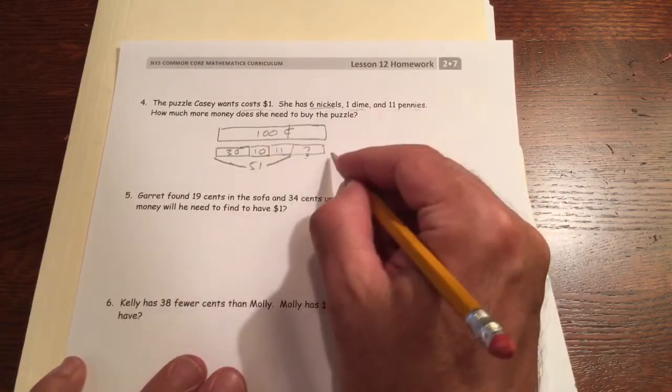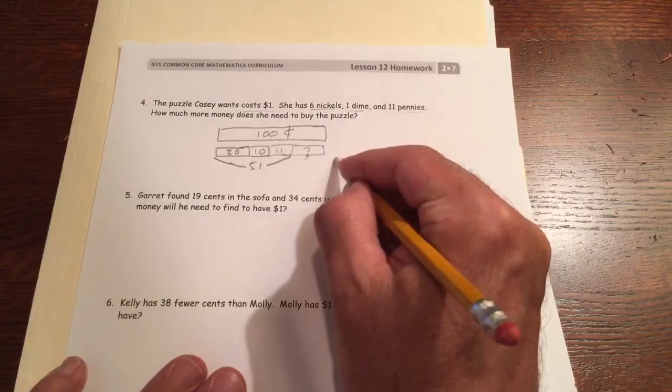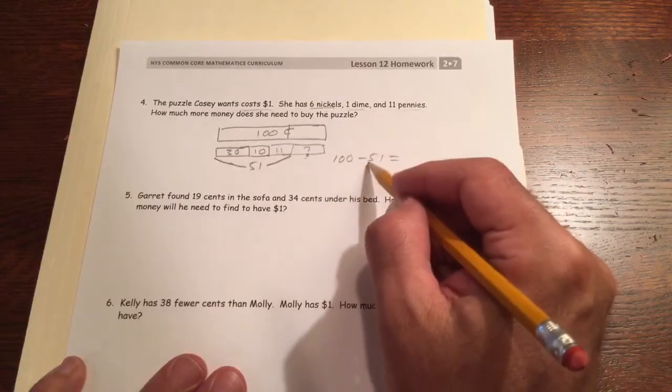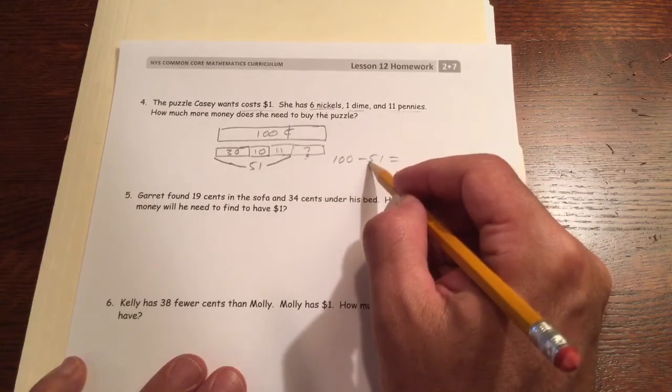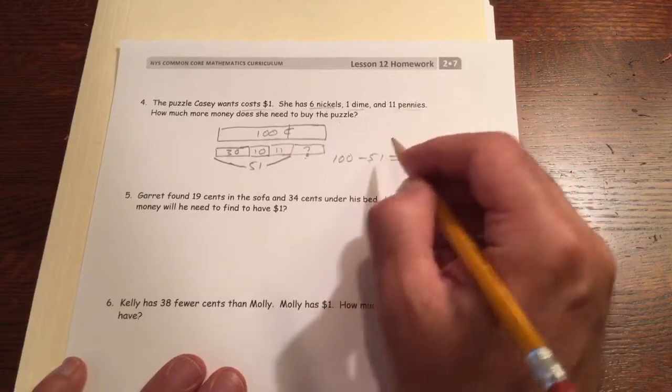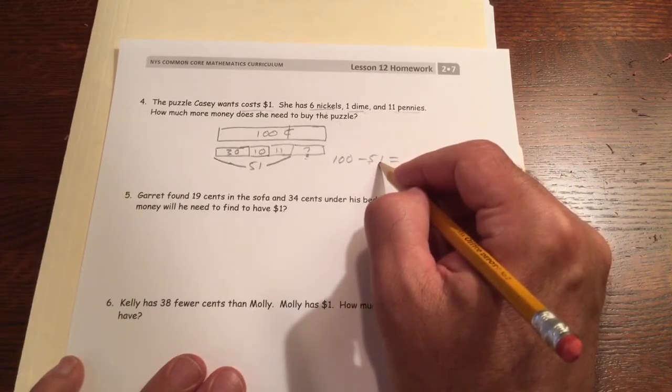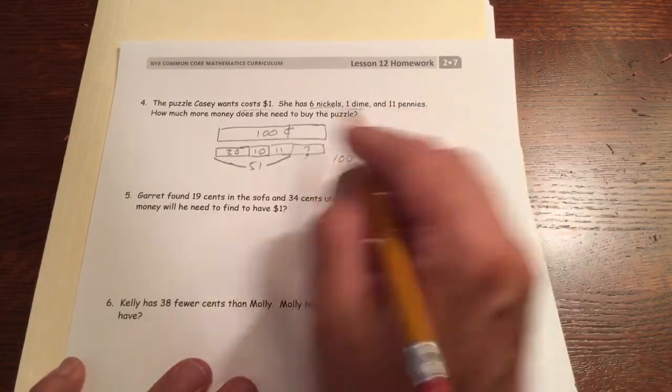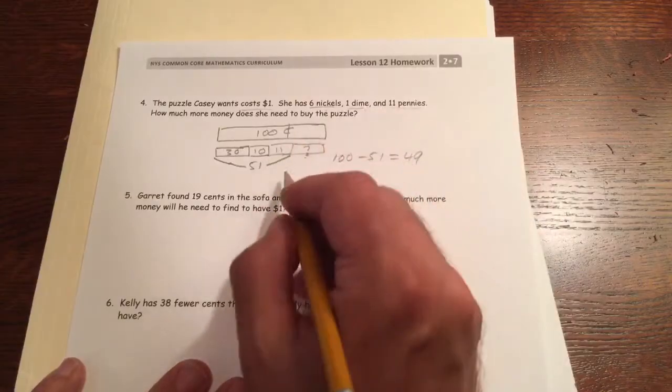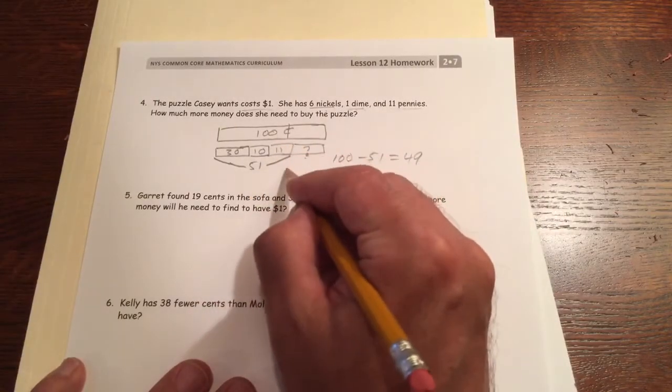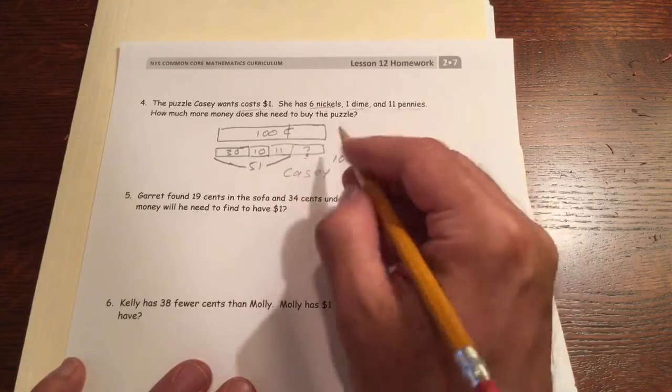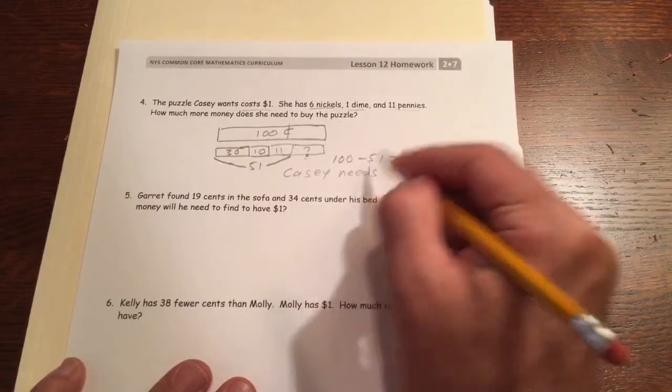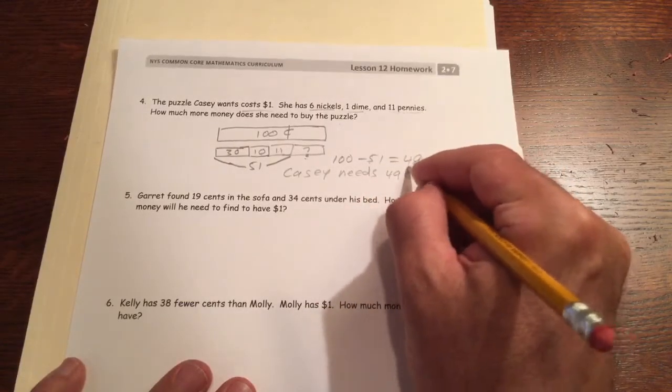We've got to figure 100 minus 51. If it was 100 minus 50, that would be 50, and subtract one more from 50 is 49. You could write it out the arrow way if you wanted to. Casey needs 49 cents more.